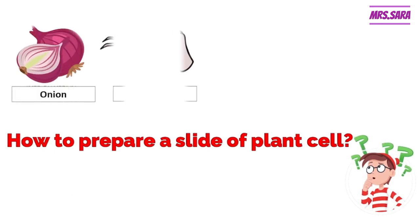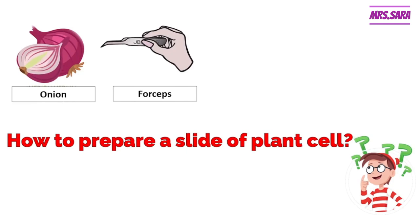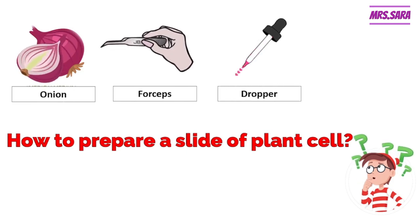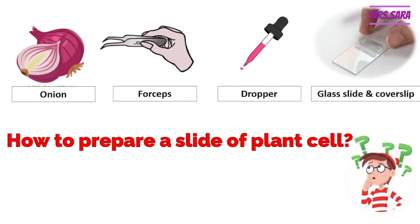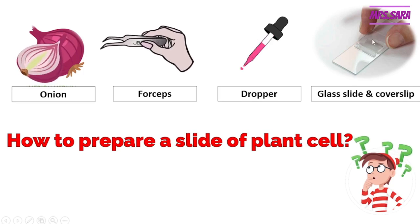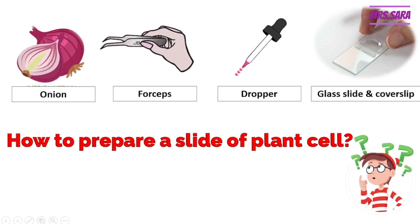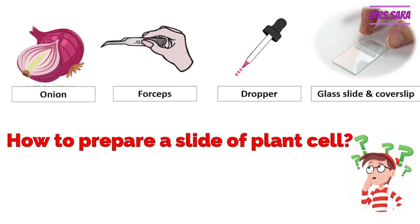To prepare a slide of a plant cell, we need an onion as a plant. We need four steps, and we need a dropper, a glass slide, and a cover slip. This is the glass slide and this part is the cover slip.